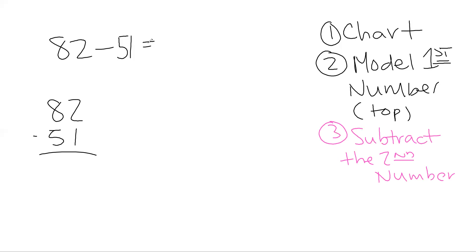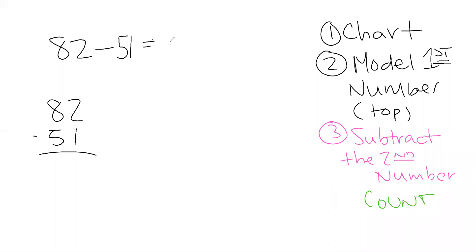So you're actually only going to model your first number. Build your chart, model your first number only. And then this is where it's a little different — this is where we then subtract or take away or cross out the second number. And then the fourth step is where we count what's left to get our difference. All right, so that's the process. Let's do it.